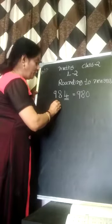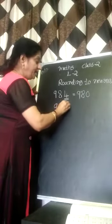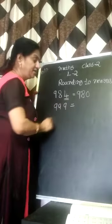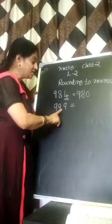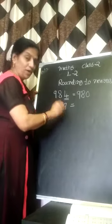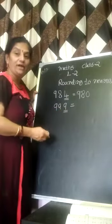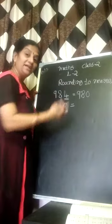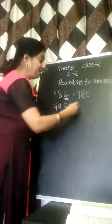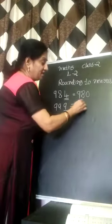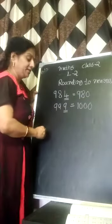For example, 999. You have to concentrate on the ones place. The ones place is greater than 5, so we have to move to the next tens — that is 1000.